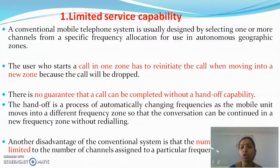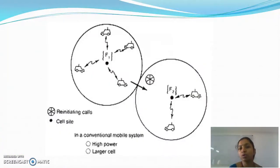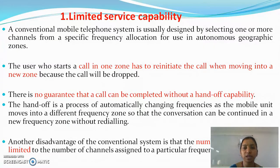Handoff is a process of automatically changing frequencies as the mobile unit moves into a different frequency zone. As shown in the figure, when the mobile moves from frequency zone F1 to zone F2, the call must be reinitiated. This is because of the high power and larger coverage area used by conventional mobile telephone systems. Additionally, the number of active users is limited to the number of channels assigned to a particular frequency zone.